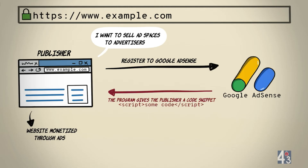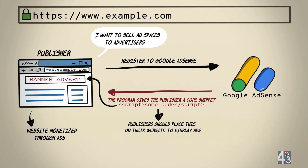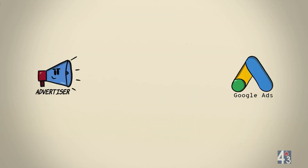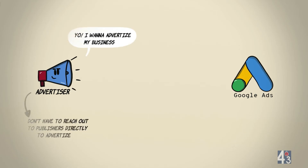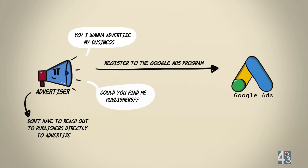On registering, publishers receive a code snippet or a script that they should place on their website to display ads. This way, the Google advertising network has a very large repository or network of publisher websites. Similarly, advertisers or companies wanting to advertise their business reach out to advertising networks. Companies or businesses wanting to advertise their products or services could register to the Google Ads program, giving Google a large network of advertisers wanting to advertise on publisher websites.